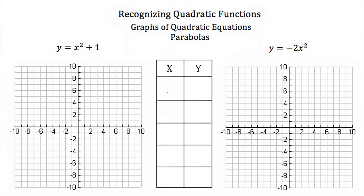Now that we know what a quadratic equation is, let's talk about graphing a quadratic equation. If we had the quadratic equation y is equal to x squared plus 1 and we wanted to graph it, we can graph this just like we would graph any other equation. We'll just plug in some values for x, solve for our values for y, and then plot them. I'm going to pick x values of negative 2, negative 1, 0, 1, and 2.